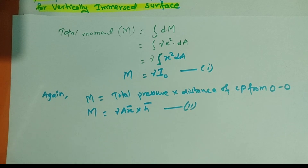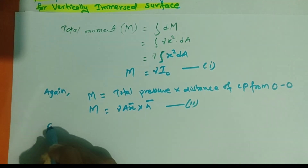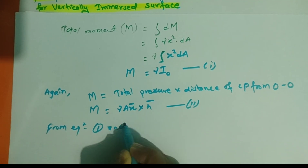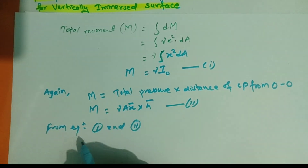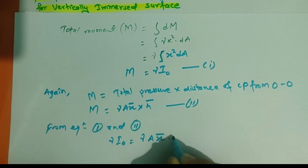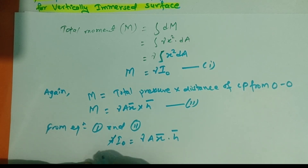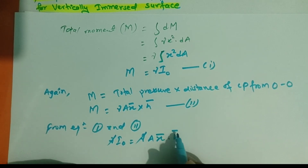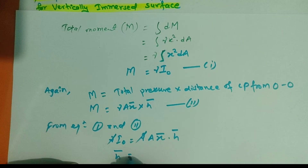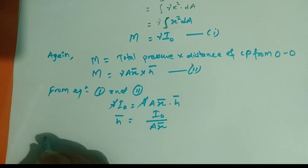Since both equations give the same total moment, we equate them: γ·I₀ = γ·A·x̄·S̄. The γ cancels from both sides, so S̄ = I₀ / (A·x̄).